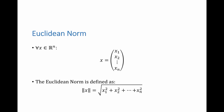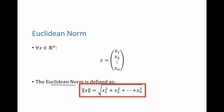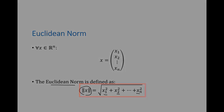In our spaces, we are going to utilize the Euclidean norm. If I have a vector x in an n-dimensional vector space, x has n components, and the Euclidean norm is defined as the square root of the sum of each of the squared components. This function satisfies the three properties defined in the previous slide.